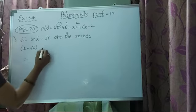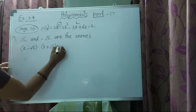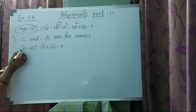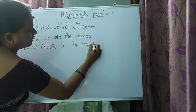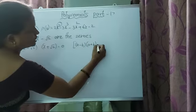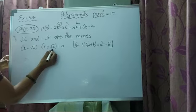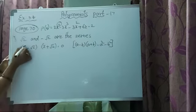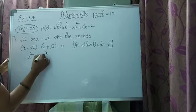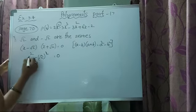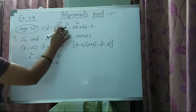Now x minus root 2 and x plus root 2 — this is in the form of the identity a minus b times a plus b, which you already studied in 8th and 9th classes, equals a square minus b square. So we write x square minus root 2 whole square. The square root gets cancelled, giving x square minus 2 equals 0. So x square minus 2 is a factor of this polynomial. By dividing, we will get two more zeros.